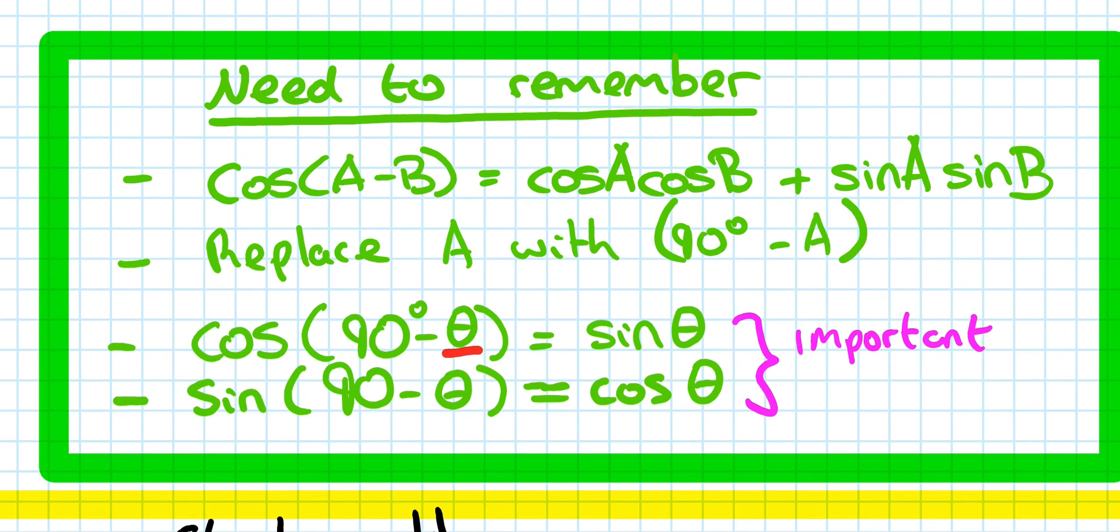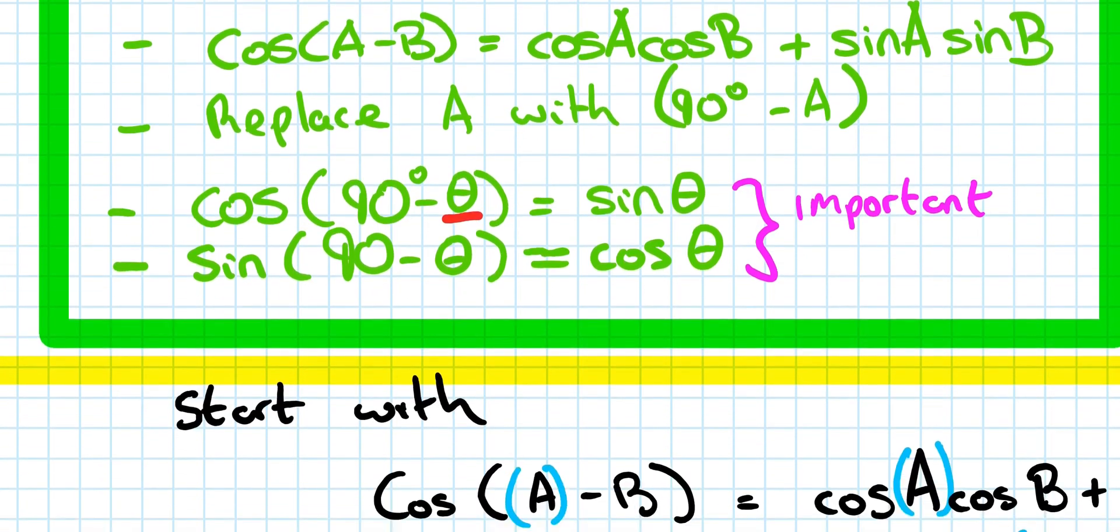So again, we're going to start off by writing down cos of A minus B, and what we get to. We're going to replace A with 90 minus A on both sides, left hand side and the right hand side, and see what develops. So yellow box is where we're proving it.